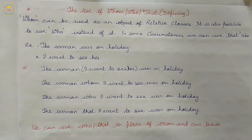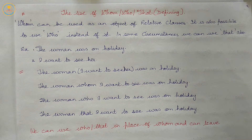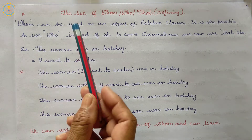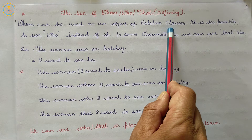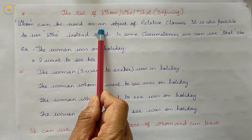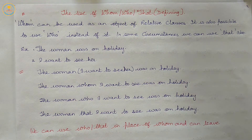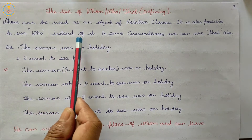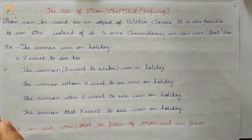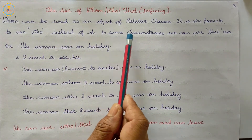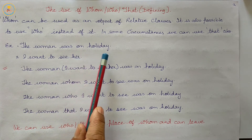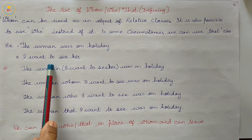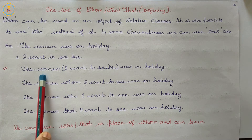Second use: the use of whom, who, or that in a defining clause. Whom can be used as an object of relative clauses. In some circumstances, it is also possible to use who instead of whom, and we can use that also. Example: first — 'the woman was on holiday.' Second — 'I want to see her.' I want to see her — she is telling something about the woman of the first sentence.